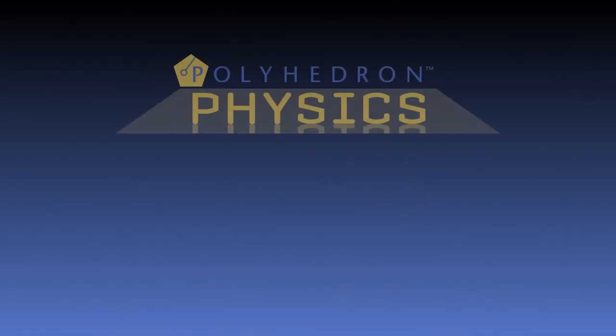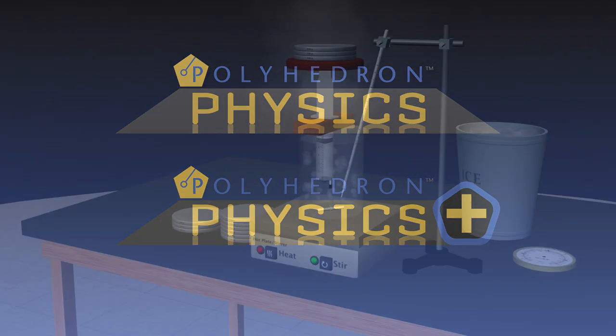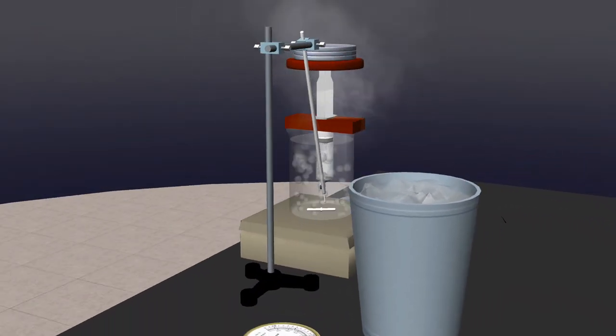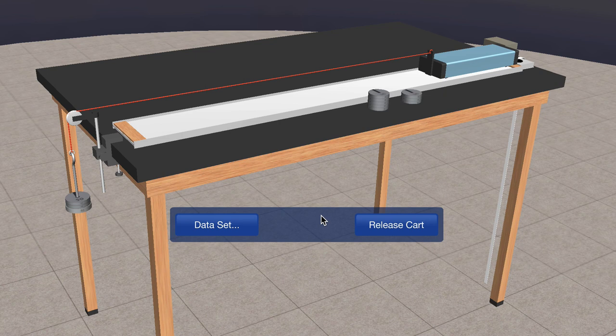Two product options are available: Polyhedron Physics and Polyhedron Physics Plus. Both include interactive 3D simulations that allow students to manipulate virtual lab equipment, conduct experiments, and collect data in a realistic way.